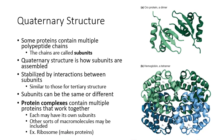Proteins that have multiple subunits have a quaternary structure, but sometimes you have a larger structure formed from multiple proteins called a protein complex. A protein complex has multiple proteins all coming together and working to carry out some larger task. The individual proteins within a protein complex may themselves be single proteins or may have their own subunits with quaternary structure.